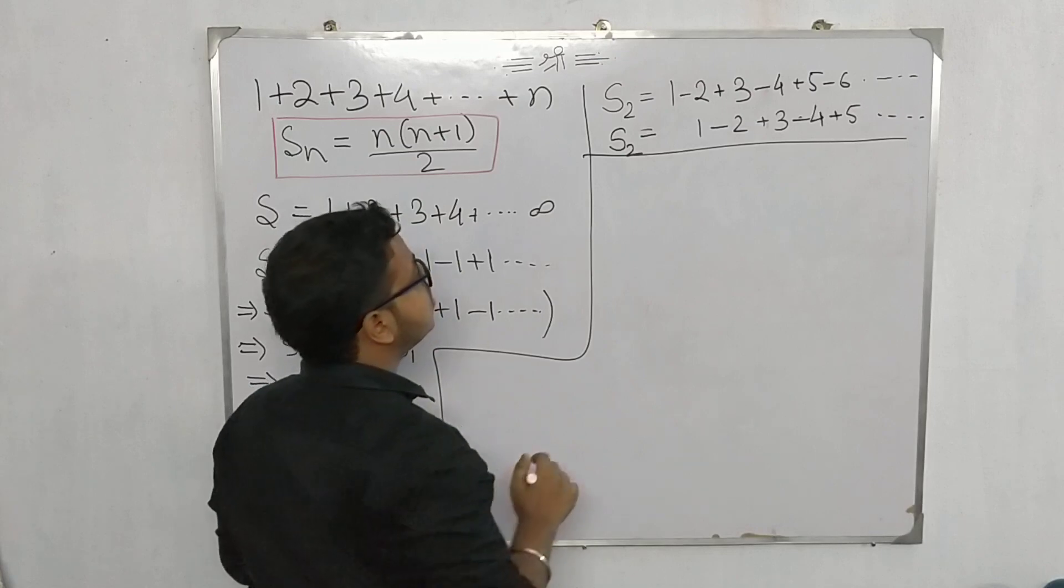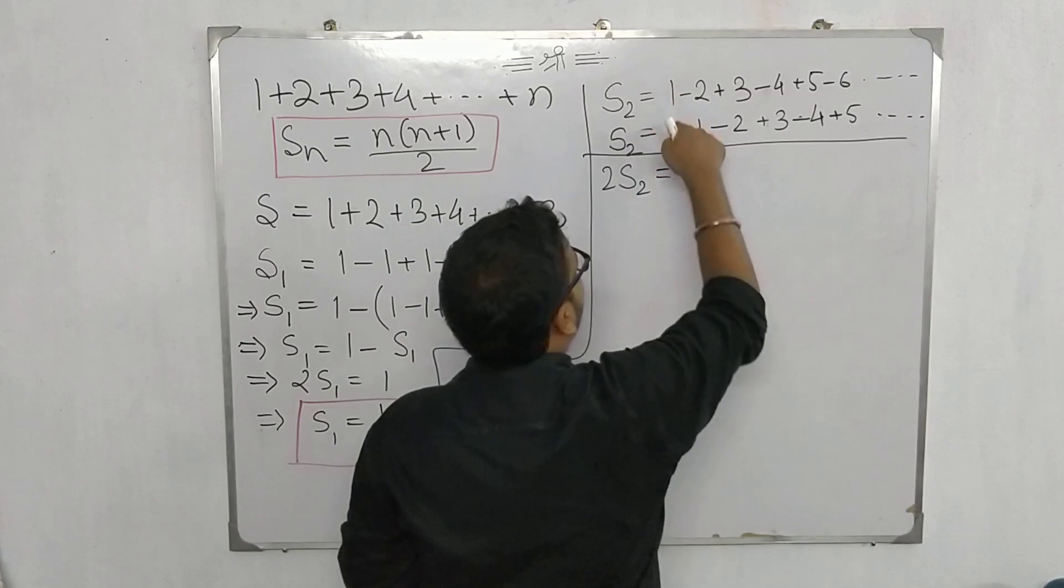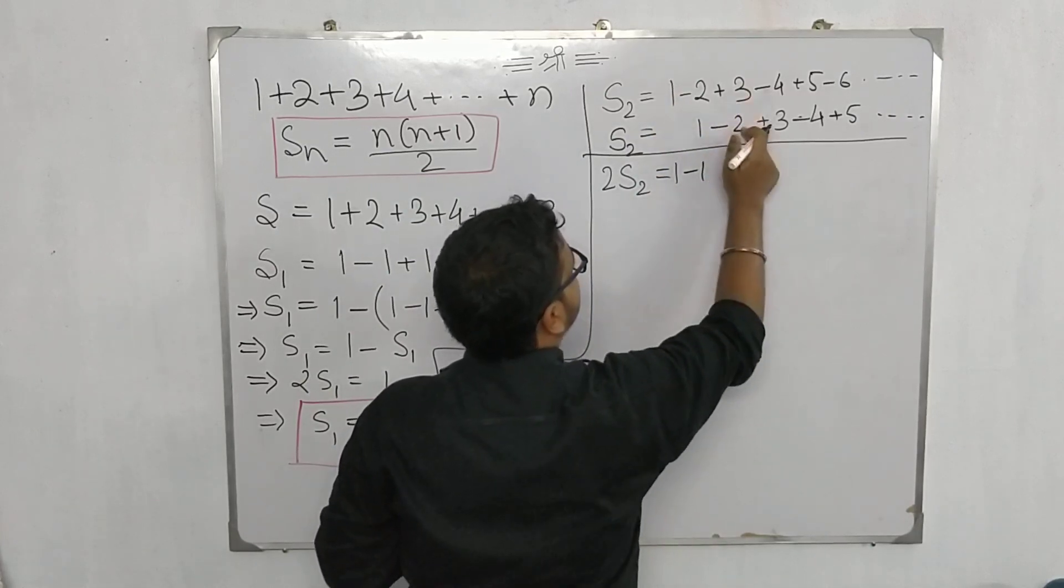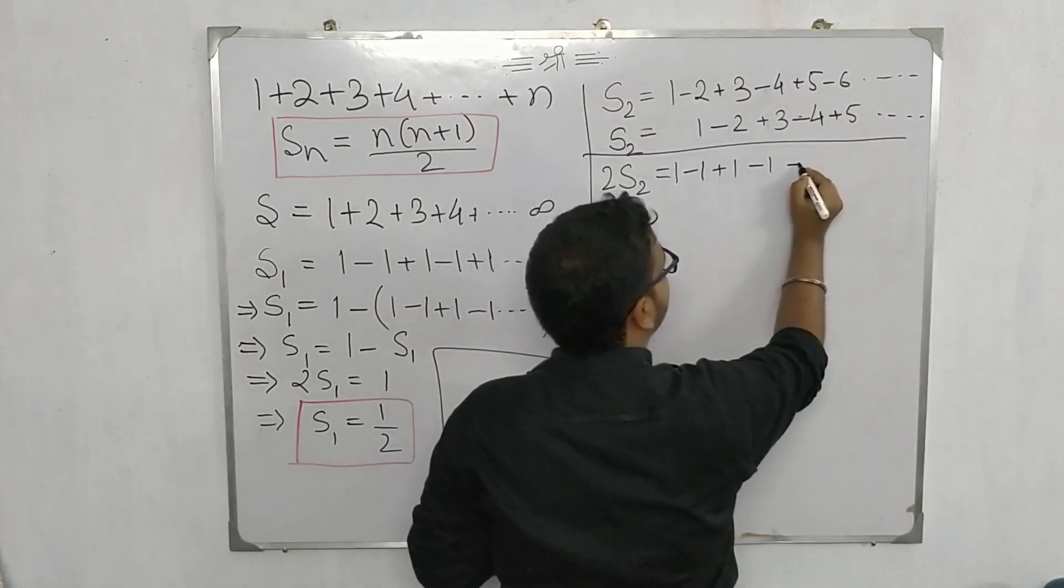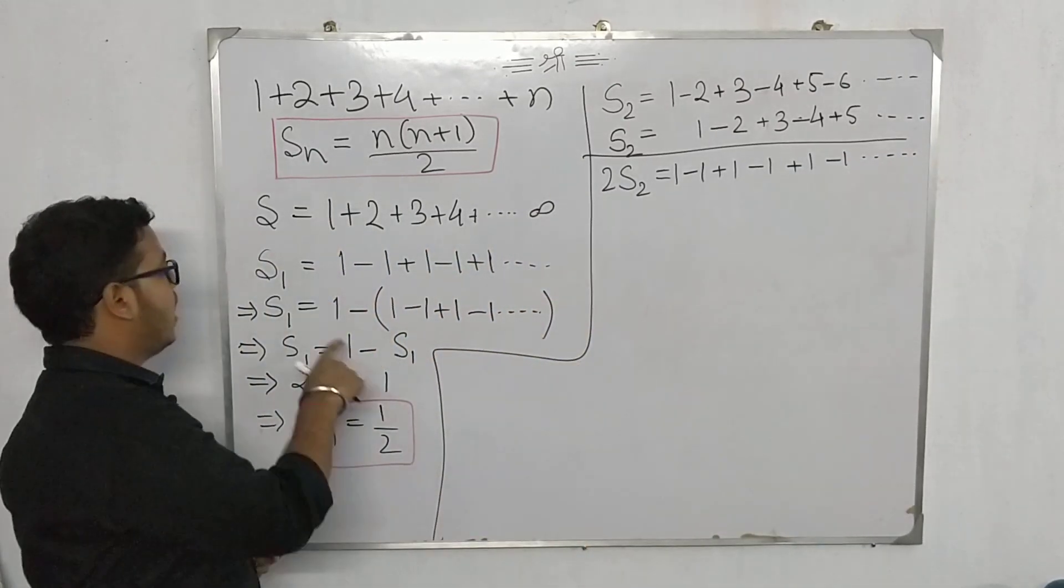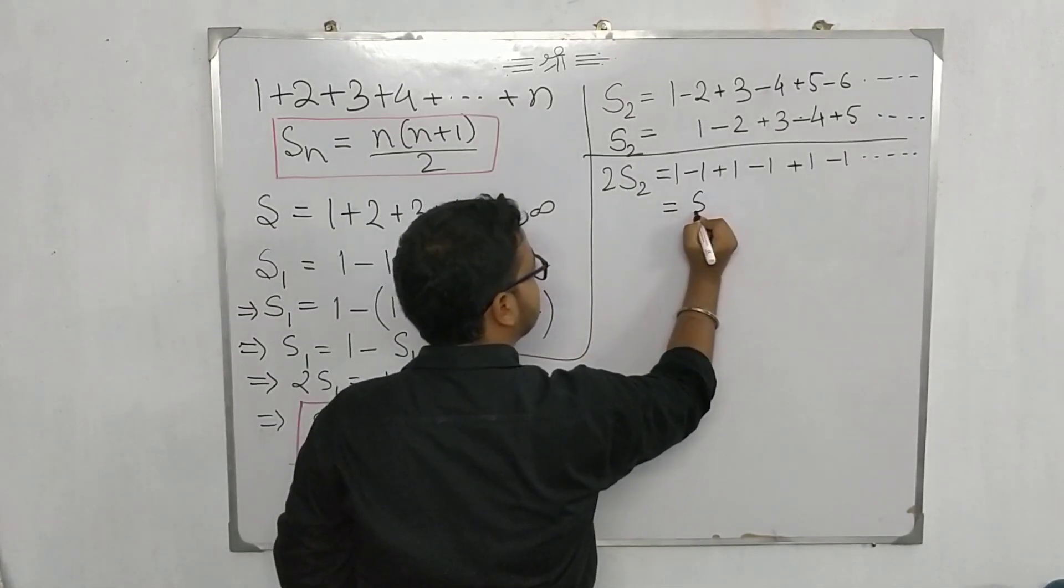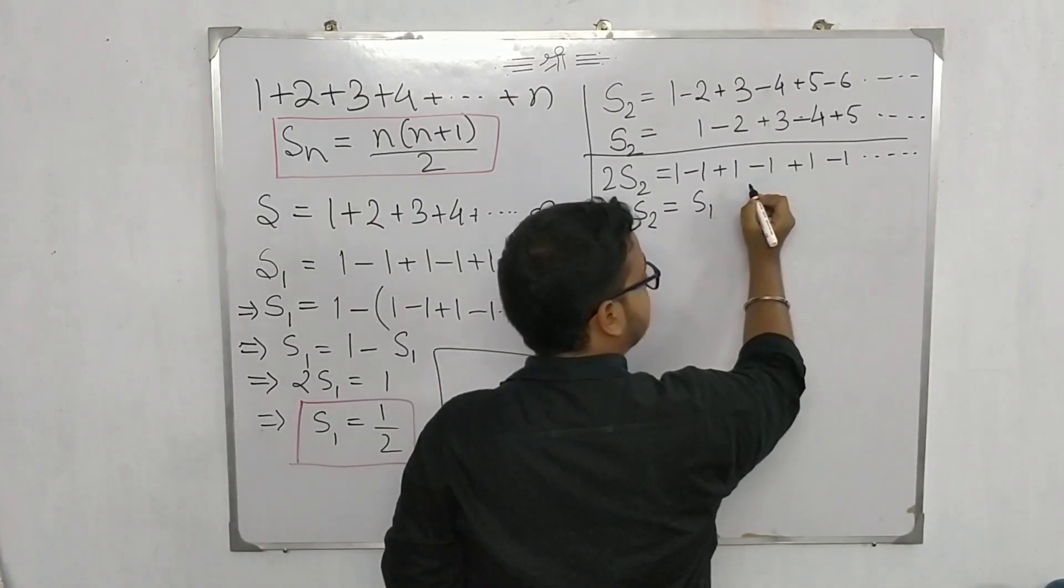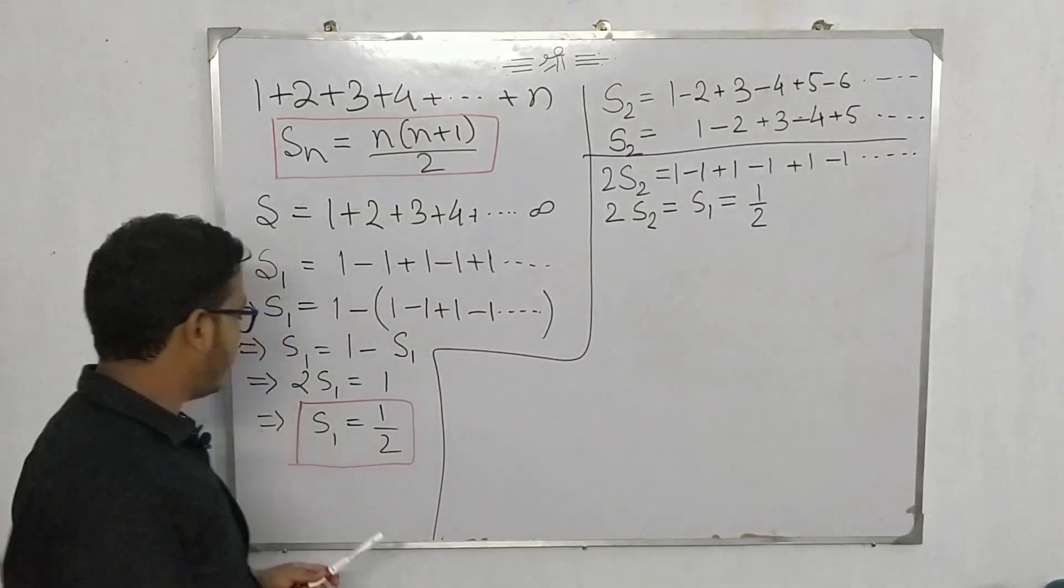If I add these two series, so 2s₂, s₂+s₂... 1 will be coming down as it is, -2+1 that is -1, this is +1, this is -4+3 = -1 again, +1, -1 and so on. If you clearly notice, it is nothing but s₁ series. So this can be written as s₁.